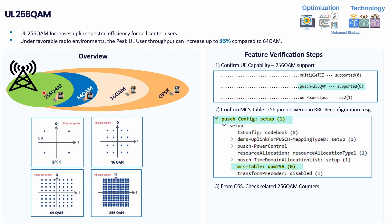Uplink 256 QAM will only take effect for users with very good radio conditions. Once you activate the feature, you need to verify through field testing whether it's working — not only based on maximum speed, but by confirming from the traces. The first thing you need to do is check the UE capability to see whether your test device supports Uplink 256 QAM. This is found in the capability message called BOCS 256 QAM.